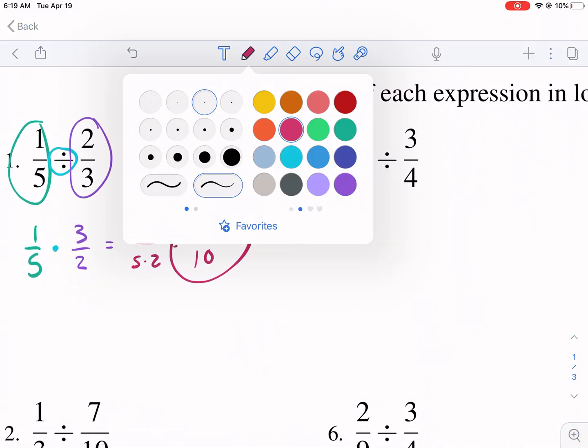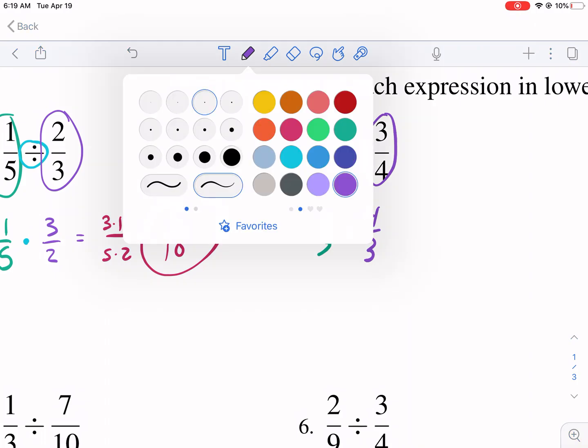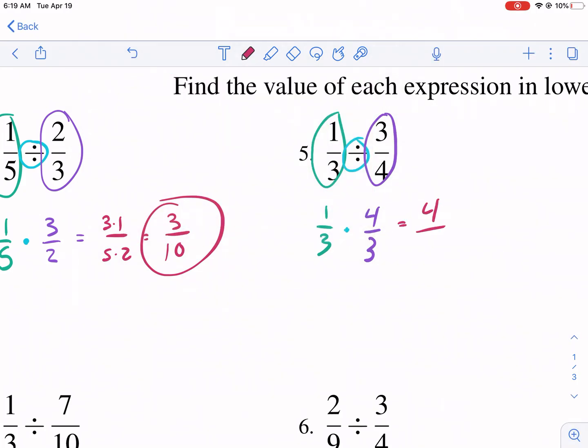Let's do another example here. Let's do 1/3 times 3/4. Or sorry, divided by 3/4. We're going to change it to something else soon. So we're going to change this to a multiplication problem, much easier that way. And then we're going to flip this to be 4/3. So this is our new problem, much easier to solve here. We're going to have 4/9, and that's it.